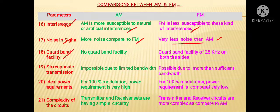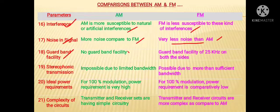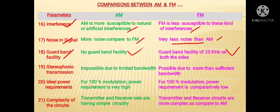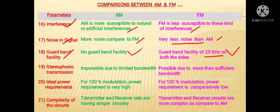Next is about guard band facility. In case of AM, there is no facility of guard band, whereas in case of FM, a guard band facility of 25 kHz on both sides is available. That means in FM there are two guard bands of 25 kHz each on both sides, and due to this no interference and no adjacent channel signals are allowed inside the main signal.